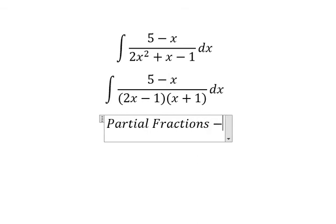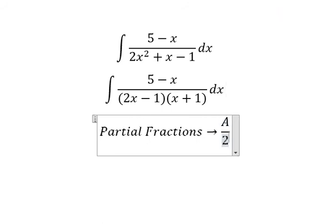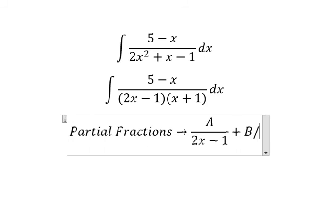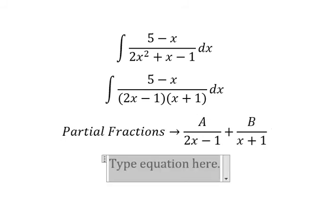So I will put capital A over 2x minus 1, capital B over x plus 1. Now we do common denominator.